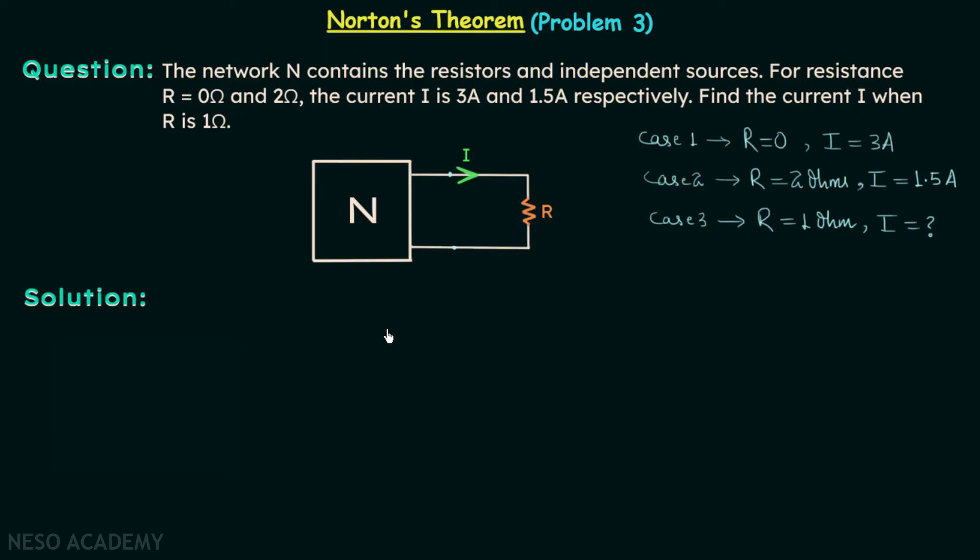In case of Norton's equivalent circuit, we have current source In in parallel with resistance Rn, and then they are connected to the load resistance which is R. According to case 3, R is equal to 1 ohm. If we can find out the value of In and Rn, we can have current I as well. Let us shift our focus on calculation of In and Rn.